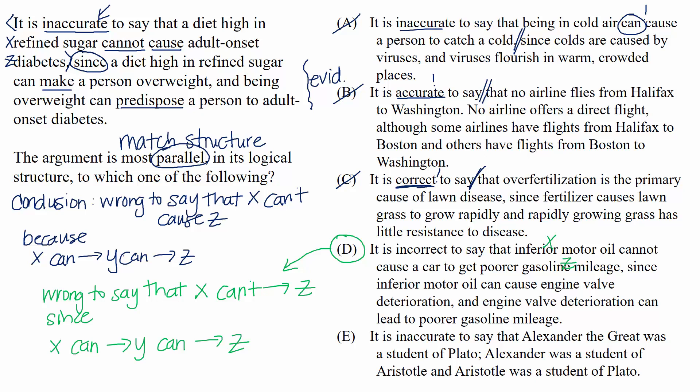For completion's sake, let's take a peek at E. It says that it is inaccurate to say that Alexander the Great was a student of Plato. Alexander was a student of Aristotle, and Aristotle was a student of Plato. This doesn't match. There's no hint of causation anywhere in the argument, so it's not parallel in its logical structure to the passage.